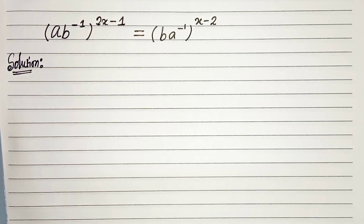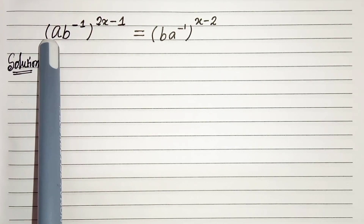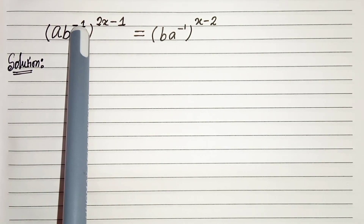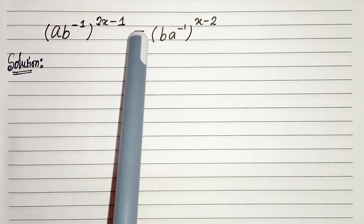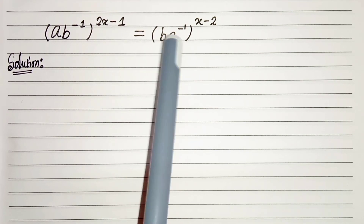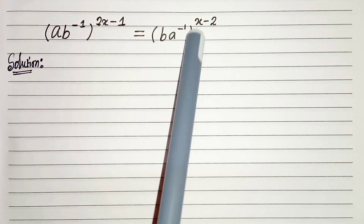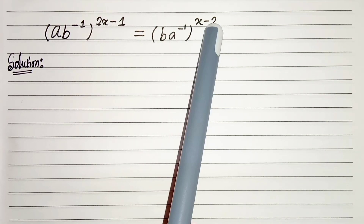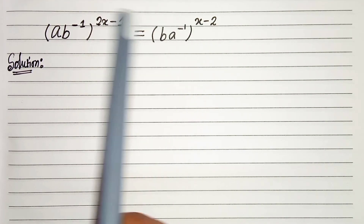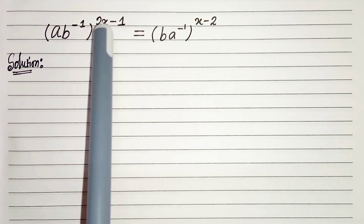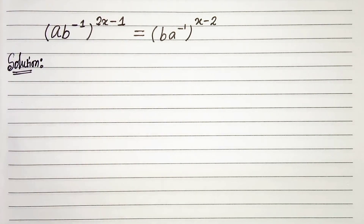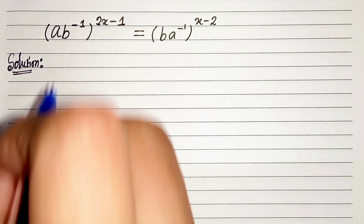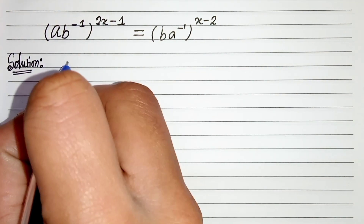Hello everyone. In this video we have (a·b⁻¹)^(2x-1) equals (b·a⁻¹)^(x-2). We have to solve this and find the value of x. So let's start.